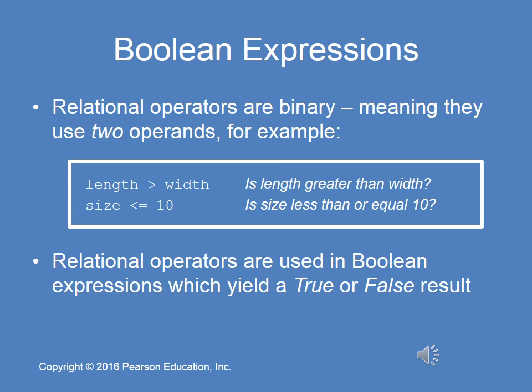Relational operators are binary operators, meaning they have two operands. For example, 'length greater than width' — is the value stored in 'length' greater than the value stored in 'width'? You can also have one variable and one value, like 'size less than or equal to 10'. A Boolean expression evaluates to one of two results — true or false. By definition, a Boolean expression can only yield true or false.